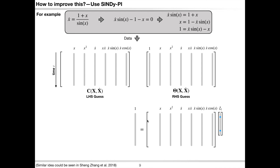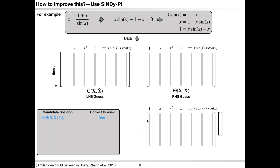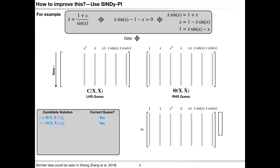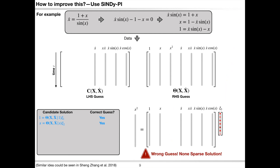Next, let's test term x: put it on the left-hand side and form a new sparse regression problem, removing x from the right-hand side library to avoid trivial solutions. Perform sparse regression, and since x is part of this implicit dynamics, we'll find a sparse and accurate model. Now we could test term x-squared. Since x-squared is not part of this implicit dynamics, when performing sparse regression, we will not get a good model.